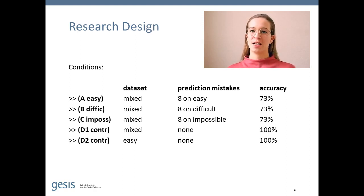Our first fictive classifier, in condition A, made 8 prediction mistakes on easy sentences. In B, we have 8 mistakes on difficult sentences. And in C, the mistakes are made on impossible sentences. In all three conditions, we see the same number of prediction mistakes, meaning that the calculated accuracy is the same in all three conditions, which is 73%. As a control condition, we also made a classifier with 100% calculated accuracy, and applied this classifier to both data sets, so the one with the mixed sentences and the one with only easy sentences.